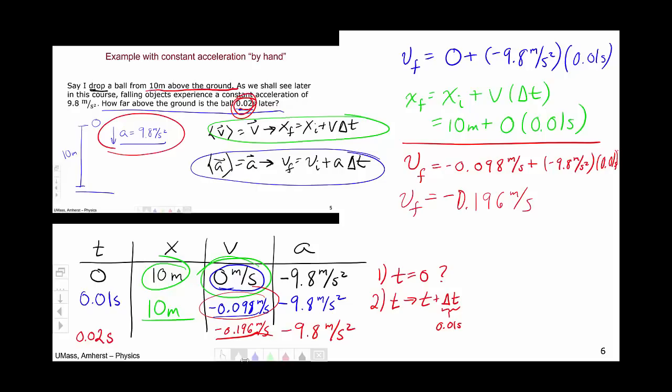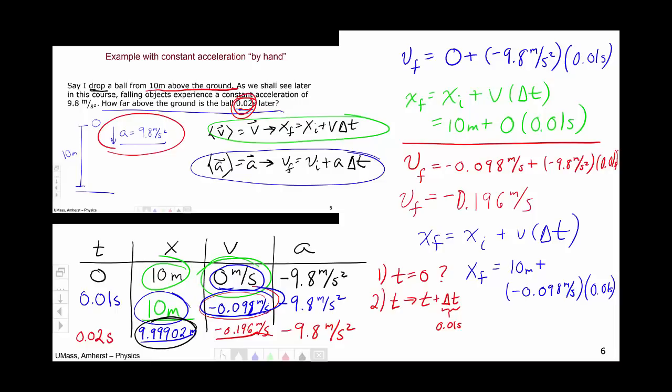Now we proceed and do position. Same thing. X-f, x-i plus v delta t. X-i is still 10, so in our simulation our ball hasn't moved yet. So we're going to have 10 meters. Remember, we're going to use this velocity. So I'm going to use that velocity, and then that time. And I'm going to put that together into my calculator and get 9.99902 meters. And this would be the answer to our problem.